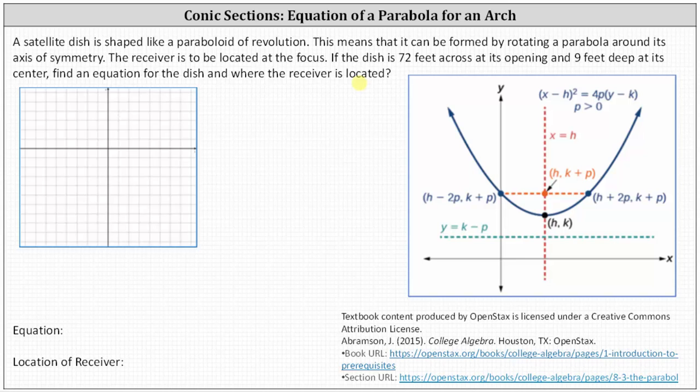The dish is 72 feet across its opening. So we'll let the y-axis be the axis of symmetry and we'll let the distance along the x-axis be the 72 feet at its opening. And because 72 divided by 2 equals 36, let the point (36, 0) on the right be an x-intercept.